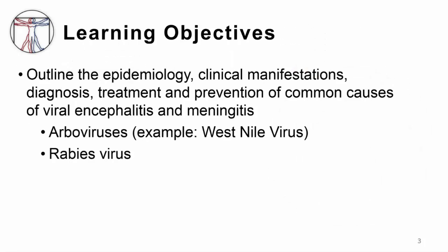Here are the learning objectives: to outline the epidemiology, clinical manifestations, diagnosis, treatment, and prevention of common causes of viral encephalitis and meningitis. We'll be talking about arboviruses using the example of West Nile virus and rabies virus.